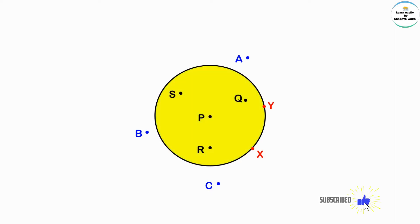This part has interior of the circle. The points you can see in this portion, namely point P, point Q, point R, point S - these points are points in the interior of the circle. All these points are inside the circle, so these points are called points in the interior of the circle.